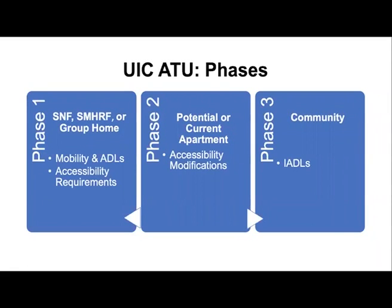We have three phases: phase one, phase two, and phase three. Phase one typically occurs in the nursing facility, MRF, or group home, where one of our physical or occupational therapists assesses the member for mobility and ADL needs and accessibility requirements prior to transitioning to the community. Phase two occurs in the potential or current apartment, where one of our architects or rehabilitation engineers provides accessibility modification recommendations. Phase three always occurs in the community, where one of our occupational therapists visits the home to discuss potential strategies and equipment the class member could benefit from.